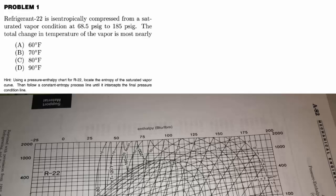Refrigerant 22 is isentropically compressed from a saturated vapor condition at 68.5 PSIG to 185 PSIG. The total change in temperature of the vapor is most nearly what? Most of these problems give a hint as well. We're going to look up the pressure enthalpy diagram for R22 in the MERM, locate the entropy of the saturated vapor curve and then follow a constant entropy process line until it intercepts the final pressure condition line.